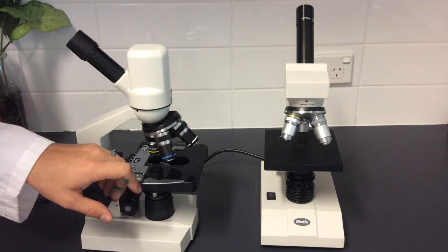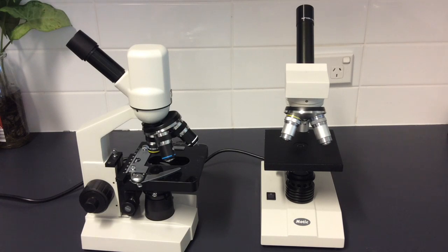You've got an arm which holds the slide in place and then you've got two knobs. These knobs are used to bring an object into focus and also to sharpen the image.